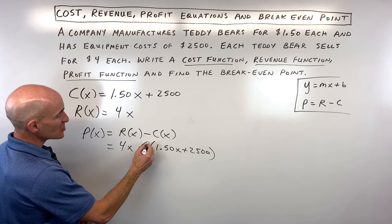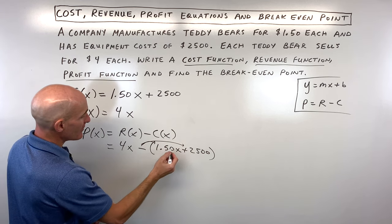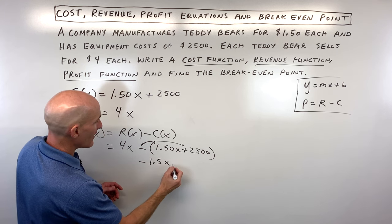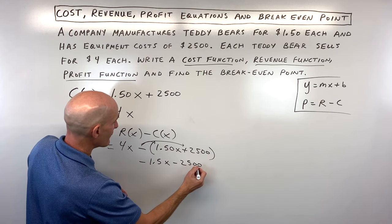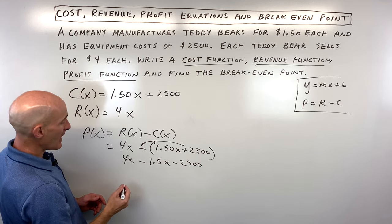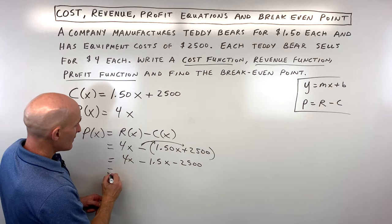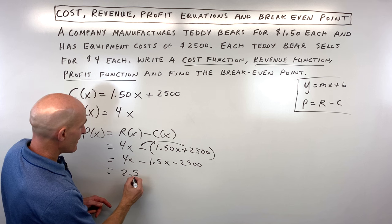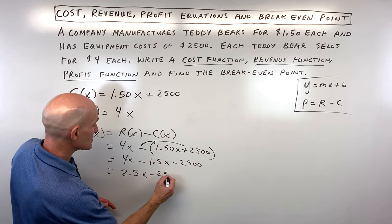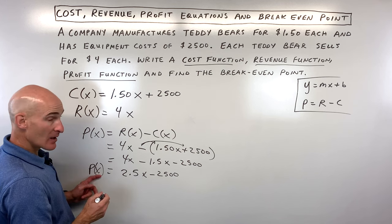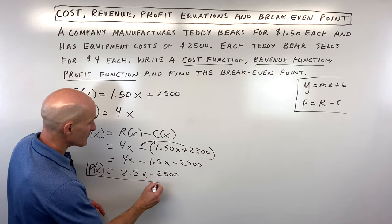And now what we're going to do is we're just going to distribute this negative 1 into the parentheses, which is going to make this a negative 1.5X minus 2,500. And if we combine like terms, 4X minus 1.5X is 2.5X minus 2,500. And that's our profit as a function of the number of teddy bears.